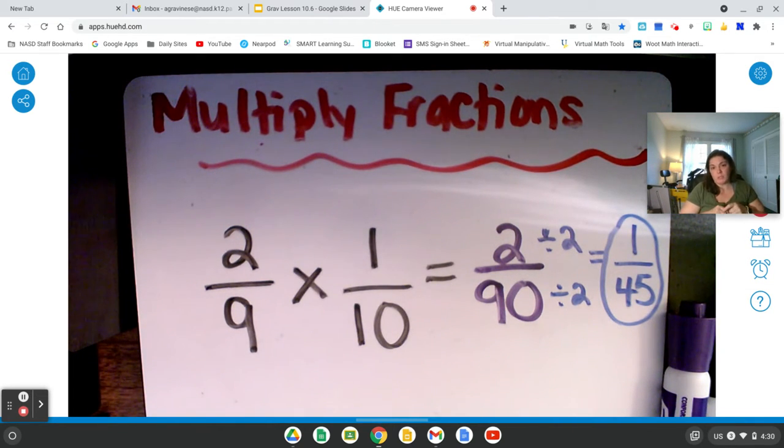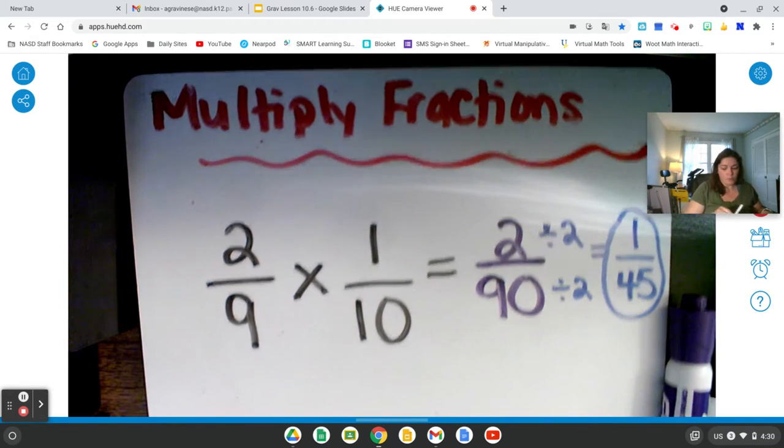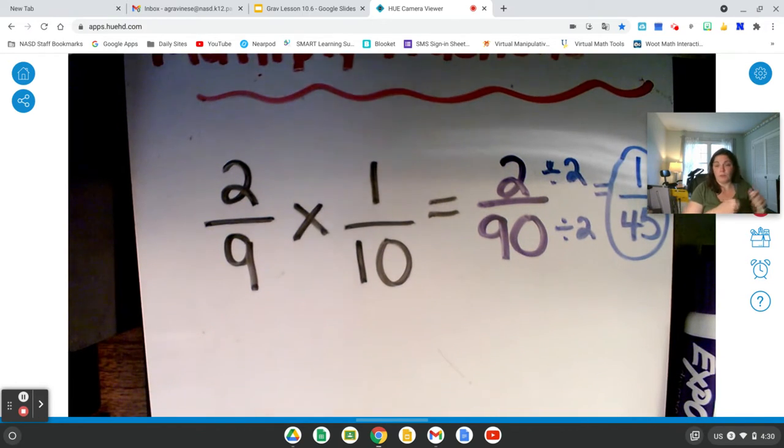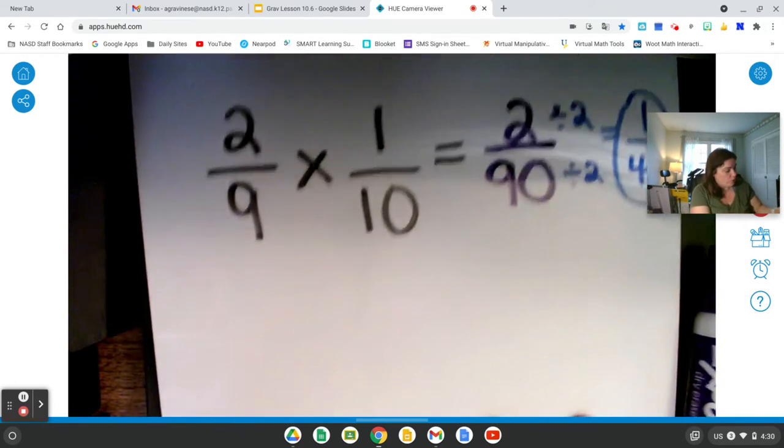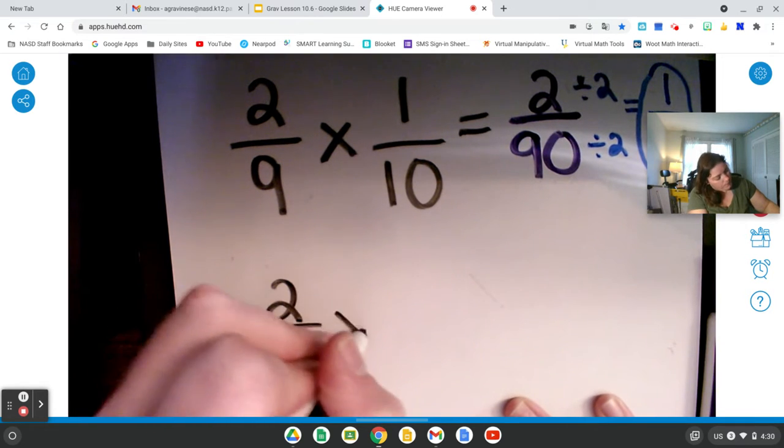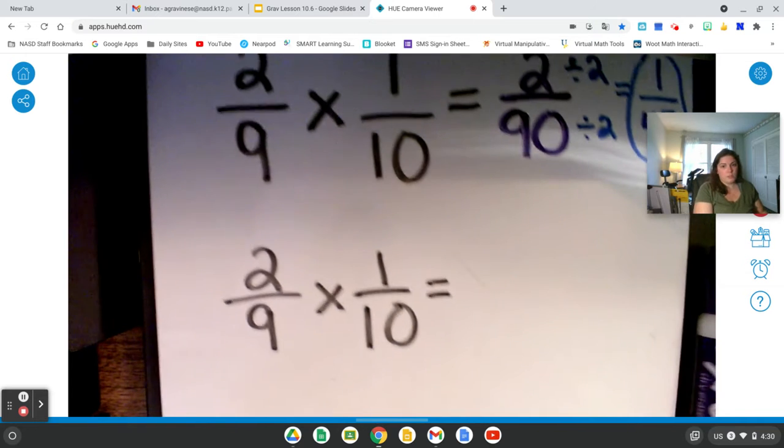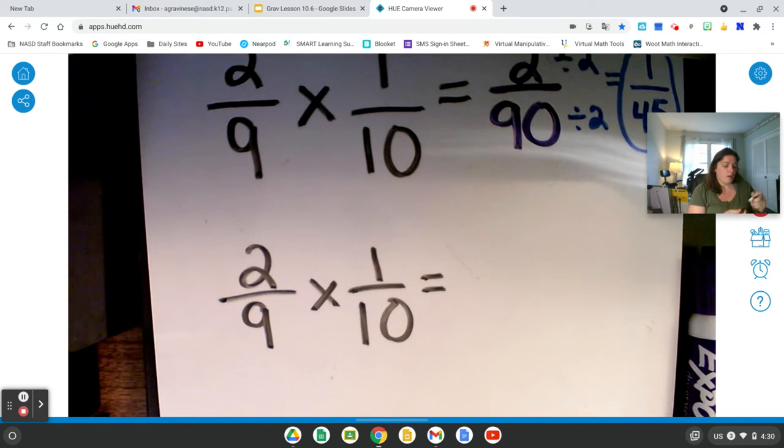Okay. The simplifying isn't too crazy. The multiplication wasn't too crazy. But I do want to show you a way to figure this out where you simplify the problem. So I'm going to keep that up there just to show you the comparison. Here's that same problem. 2/9 times 1/10. Now, I showed you this in the previous video.